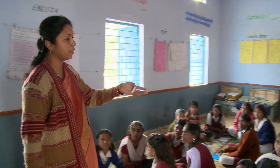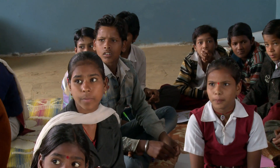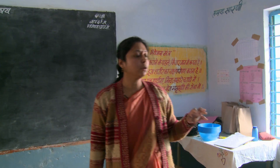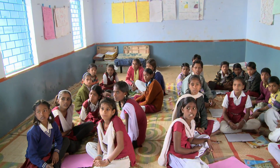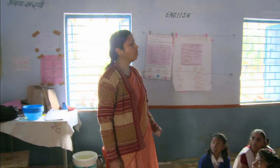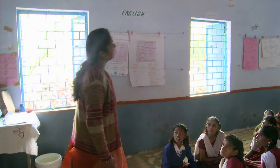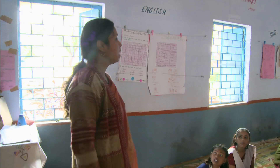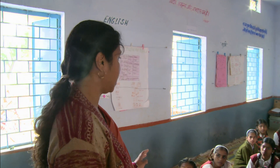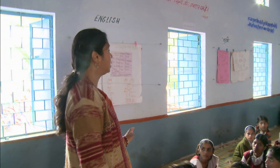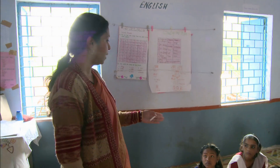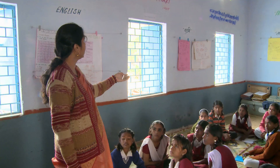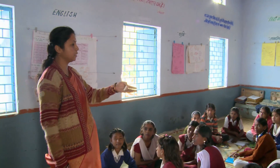In this upper primary science class, a teacher has arranged her students into four groups to develop their understanding of floating and sinking. Notice how the teacher asks each group to decide who will take responsibility for different aspects of the task. The teacher asks each group to select a leader, and that leader to select a note-taker.